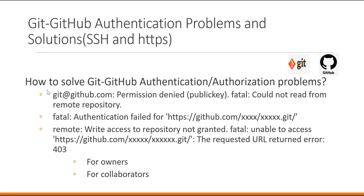In summary, we have seen how we get different types of issues when accessing the GitHub server from a git client. We covered permission denied with public key — this occurs when there is no public key in the GitHub server corresponding to a private key in the client, or if there is a mismatch. We also saw several cases for authentication failed and 403 errors with HTTPS protocol, for both owners and collaborators, and how to solve the corresponding issues.